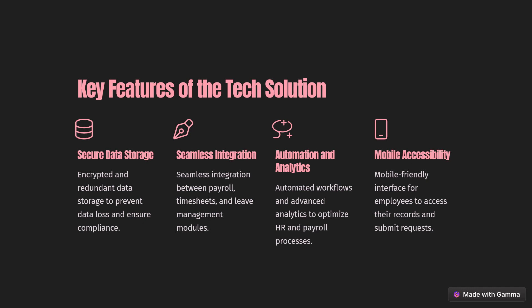Key features of the tech solution include: secure data storage, seamless integration, automation and analytics, and mobile accessibility. Technology acts like a reliable go-to resource with key features that address your needs. It keeps data storage secure, enables seamless and smooth integration, and offers automation and analytics to optimize HR solutions. Mobile accessibility is also crucial — since everyone has access to mobile devices, a mobile-friendly interface lets employees easily access their records, check attendance, view salary updates, and submit requests without delay.